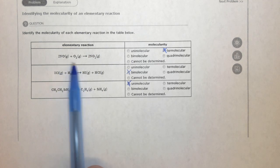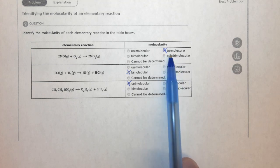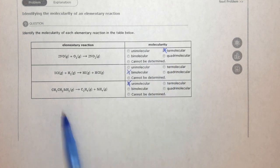One, two, three, one, two, and one. And then you just pick the appropriate uni, bi, ter, quadromolecular, quadromolecular. And that's how you answer the question.